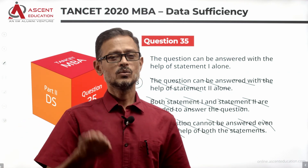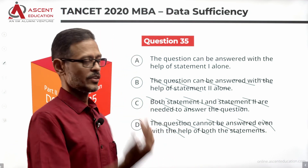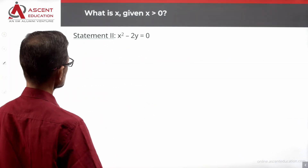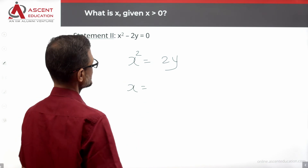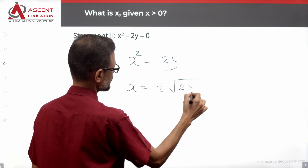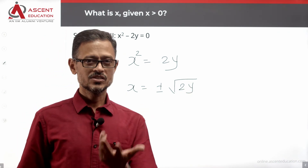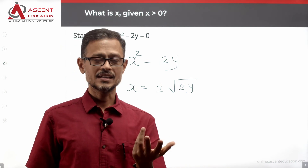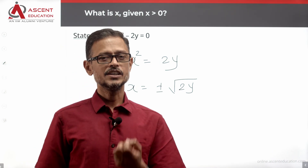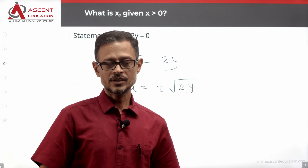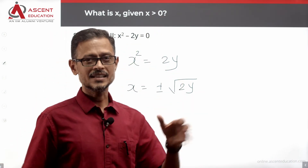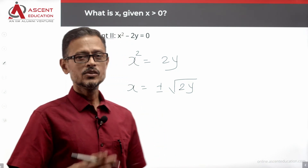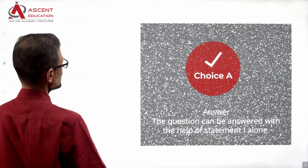But because we are in a learning mode, let's also evaluate Statement 2. Statement 2 is: x² - 2y = 0, which gives x² = 2y, so x = ±√(2y). With y free to vary, there are multiple possible values of x. We have not been able to find a unique value using Statement 2, so Statement 2 alone is not sufficient.